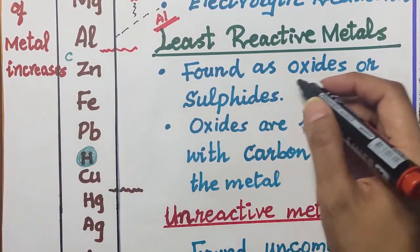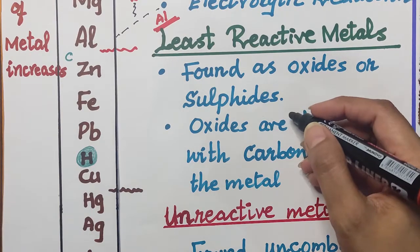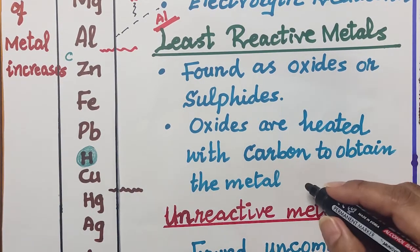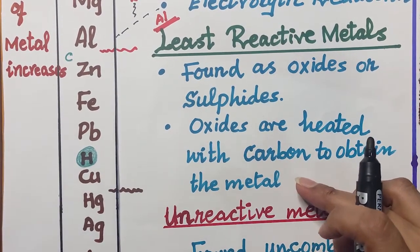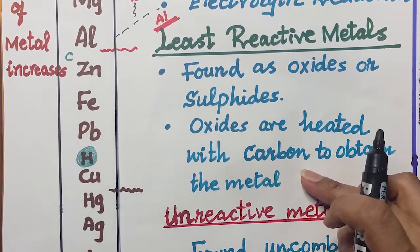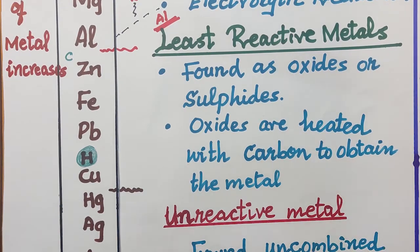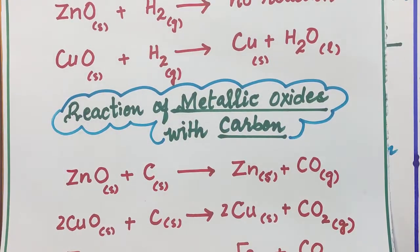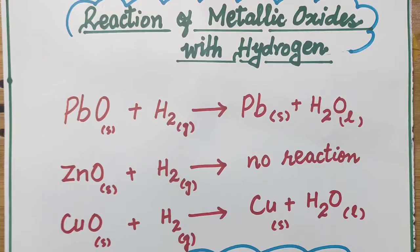For the least reactive metals — from zinc to copper — these metals are found as oxides or sulfides, and their oxides are heated with carbon to obtain the metal. Gold (Au) is found uncombined as the element, so gold is not in a compound; we can simply collect it.